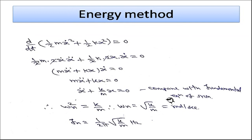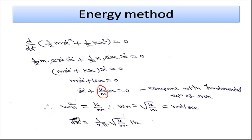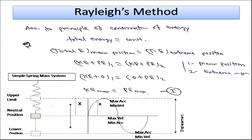Comparing m×x-double-dot + kx = 0 with the SHM equation x-double-dot + ωn²×x = 0, we again find ωn² = k/m, therefore ωn = √(k/m) in radians per second. The natural frequency in Hertz is fn = (1/2π)√(k/m). This confirms the same result as obtained from D'Alembert's principle.